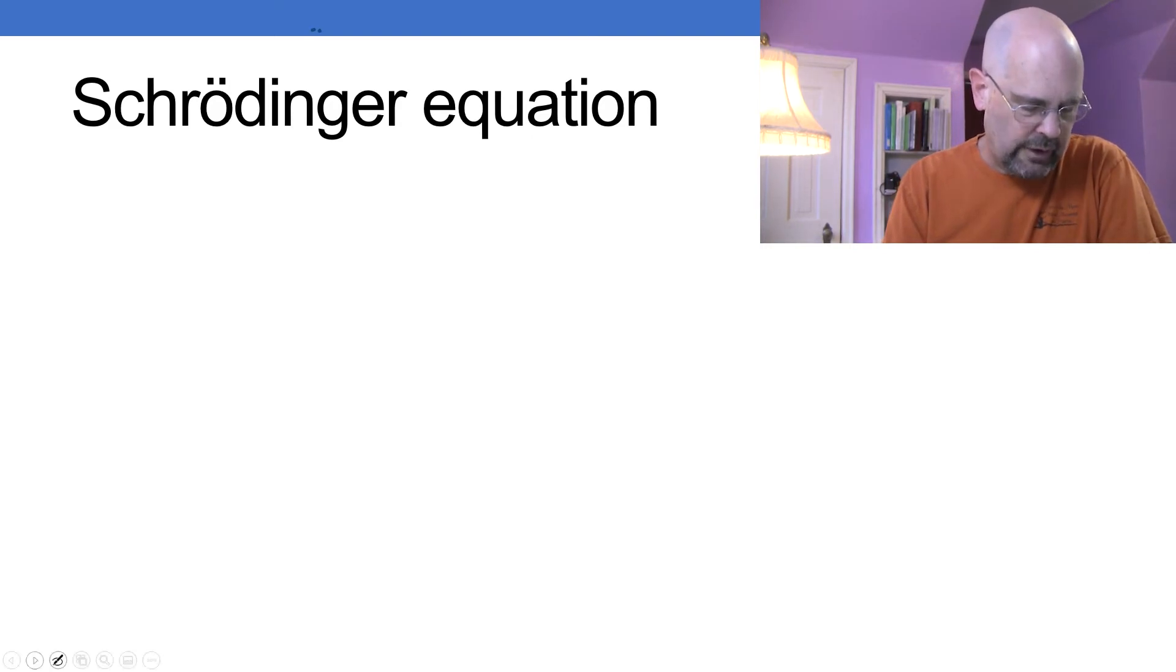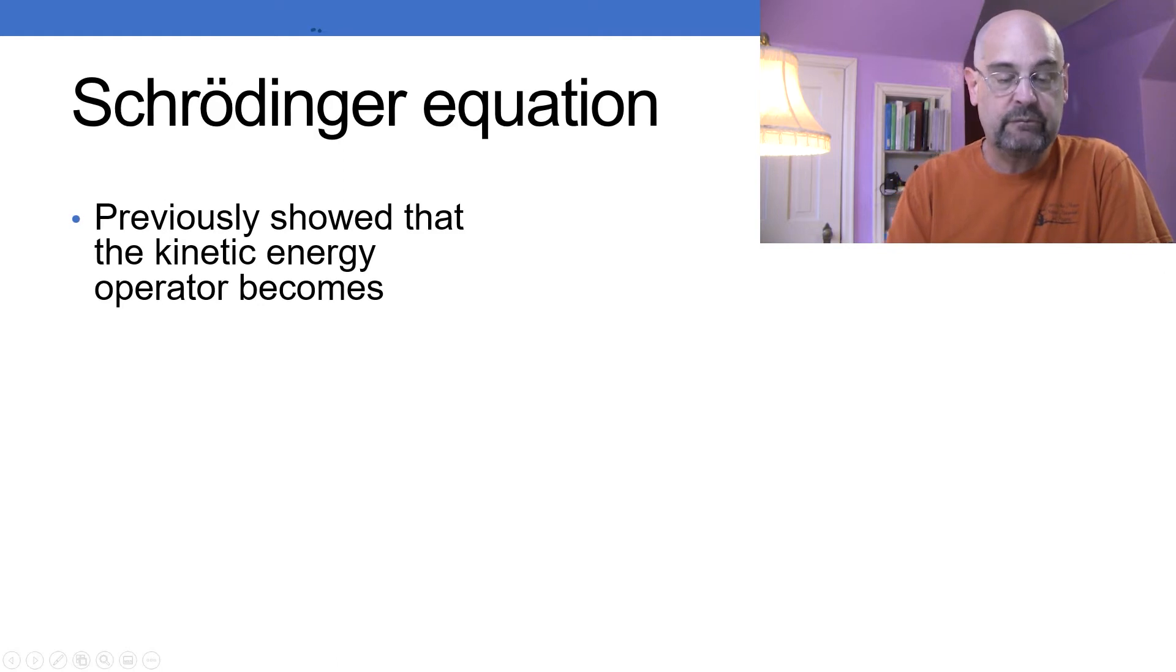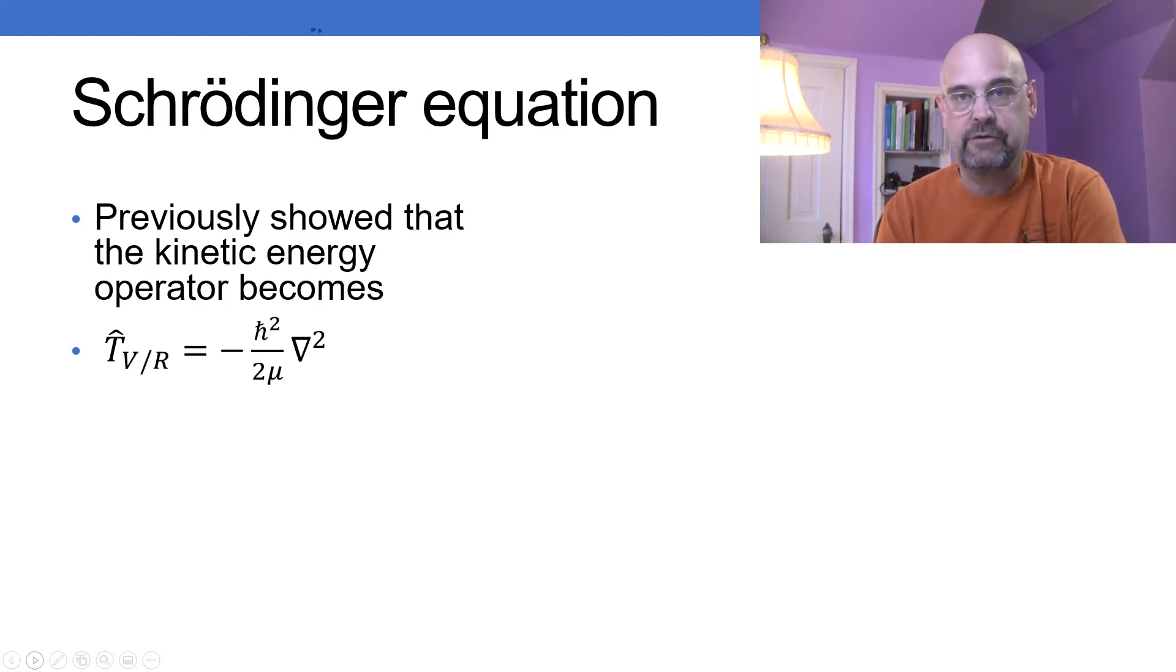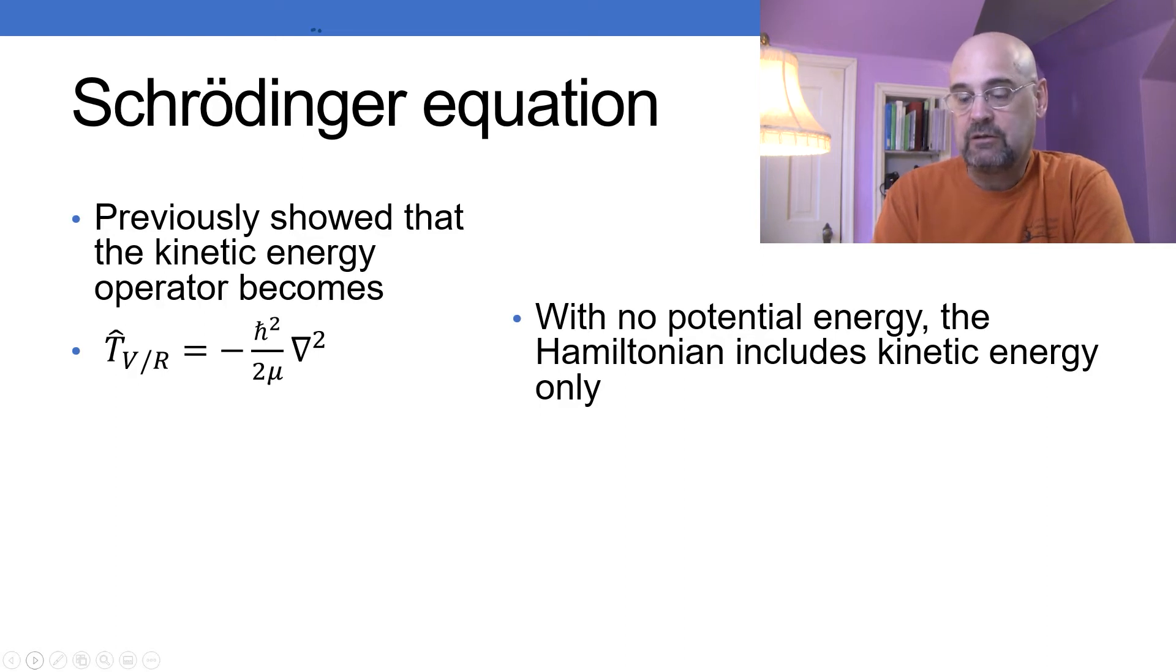So let's set up the Schrödinger equation. We previously showed that the kinetic energy operator in this situation is going to be equal to minus h bar squared over 2 mu del squared. Now turns out there's no potential energy, so that makes things a little bit simpler. The Hamiltonian only includes that term, so it's just equal to minus h bar squared over 2 mu del squared.